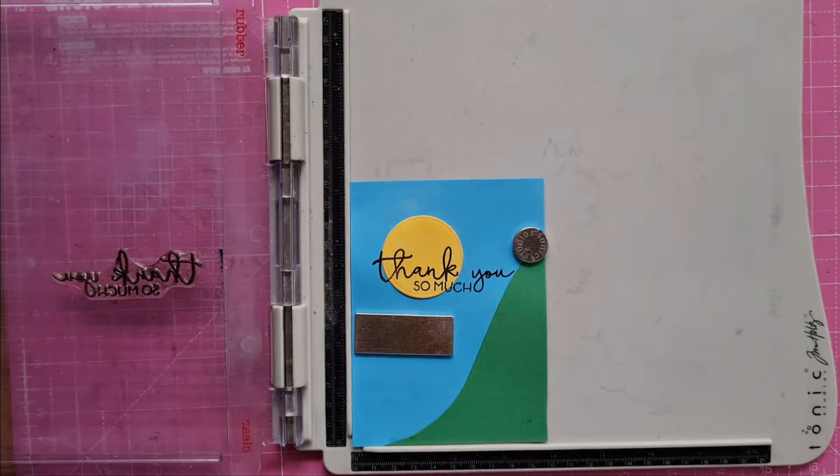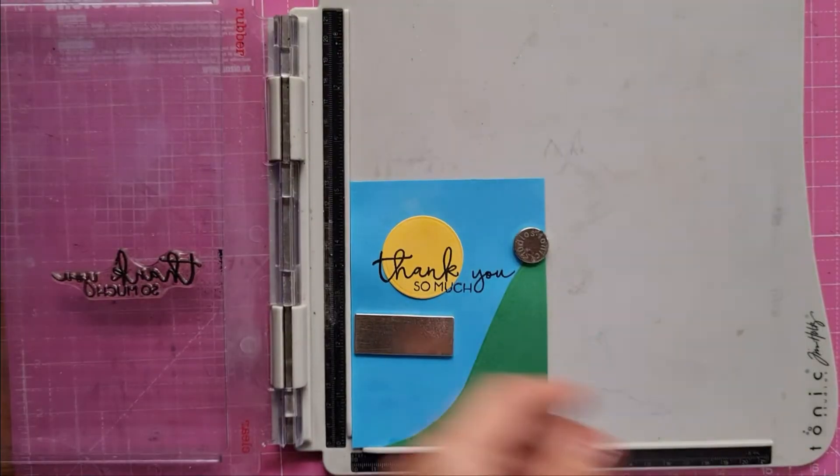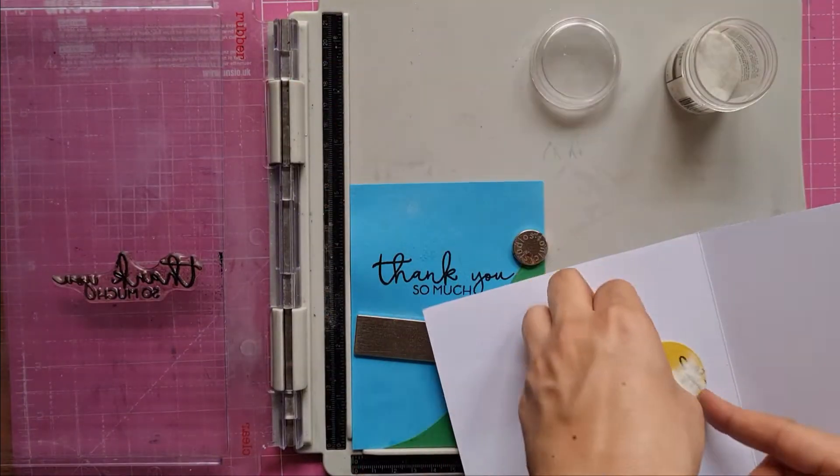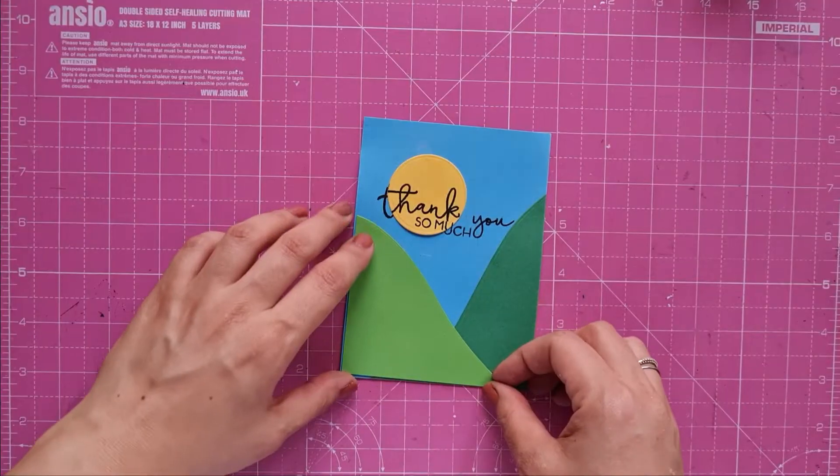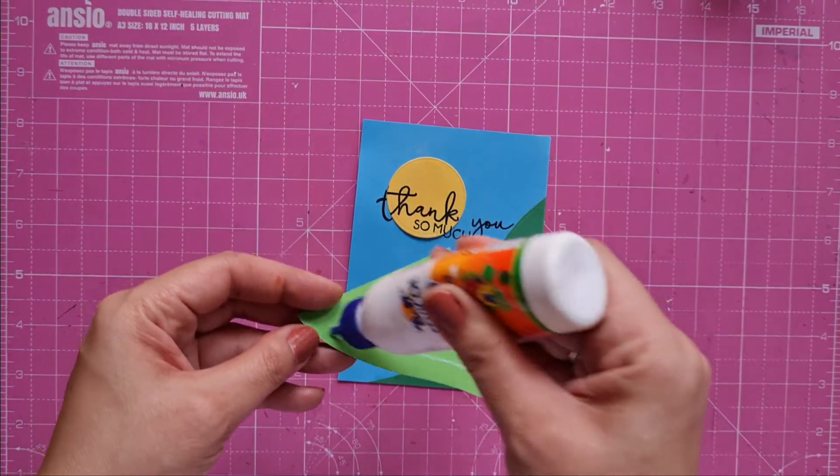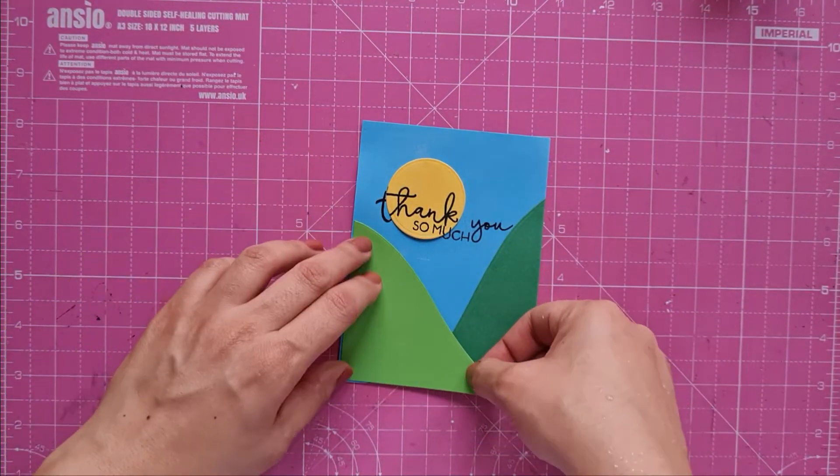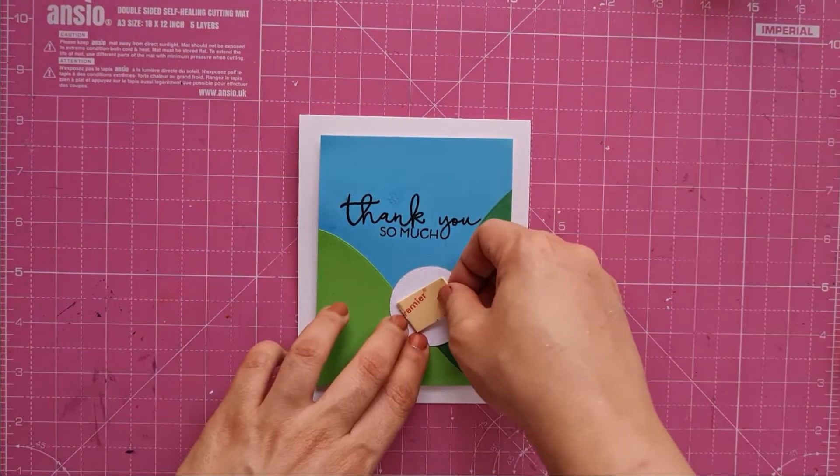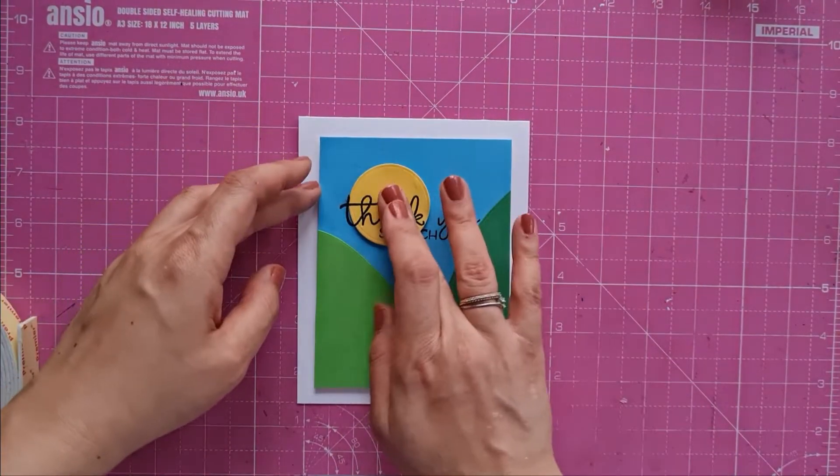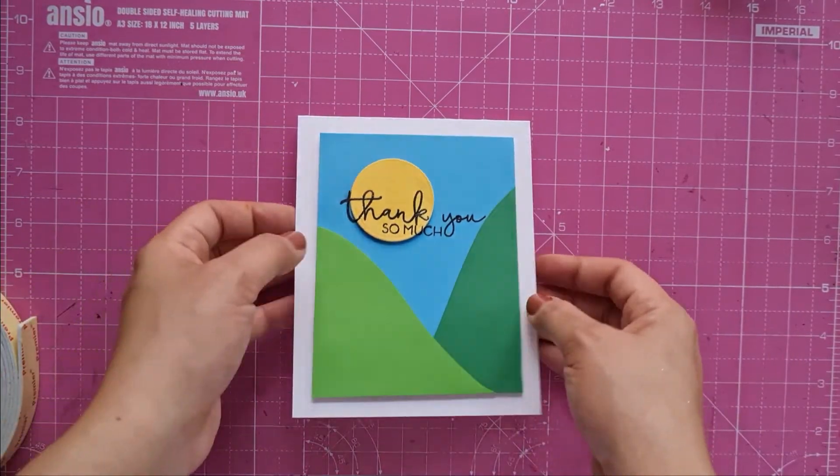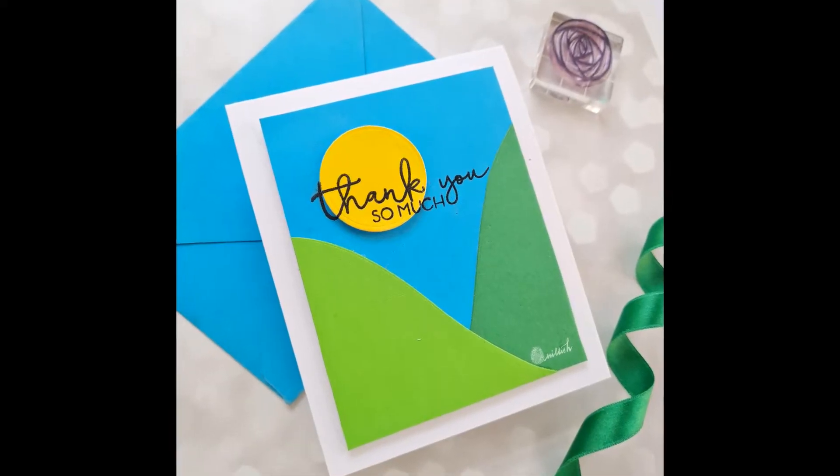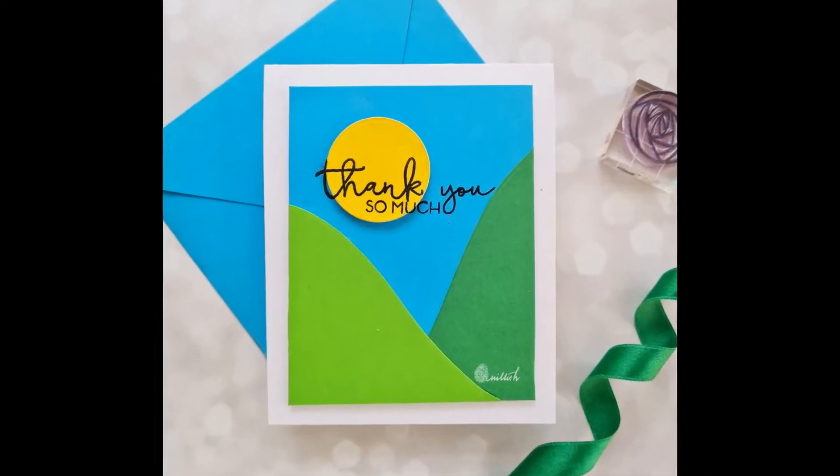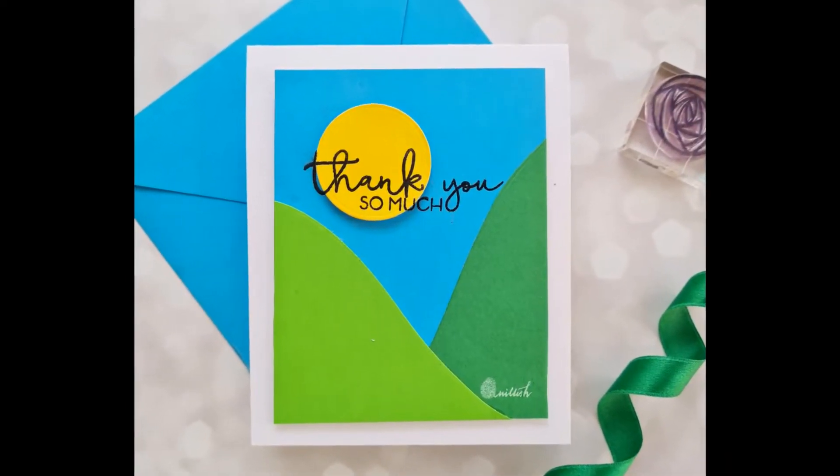Then I position the sun temporarily on the sentiment and stamp the sentiment again and heat emboss it too. Eclipse stamping is a great way to add more interest to cards. Though it looks tricky, it's very simple and may just take a minute longer. I adhere my other hill and mount my landscape with 3D foam tape on a top-folding white card base, then my sun on foam tape too. Here is my first idea using the sentiment of my favorite stamp set and color blocking with cardstock and die cutting.